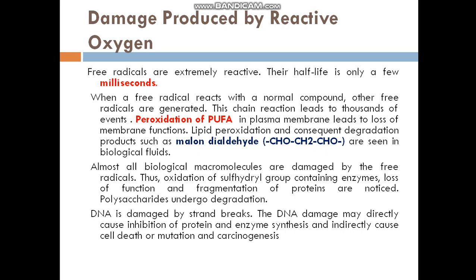Diamond is produced by reactive oxygen species. Preradicals are extremely reactive; they have a half-life of only a few milliseconds. When a preradical reacts with a normal compound, other preradicals are generated. This chain reaction leads to thousands of events.